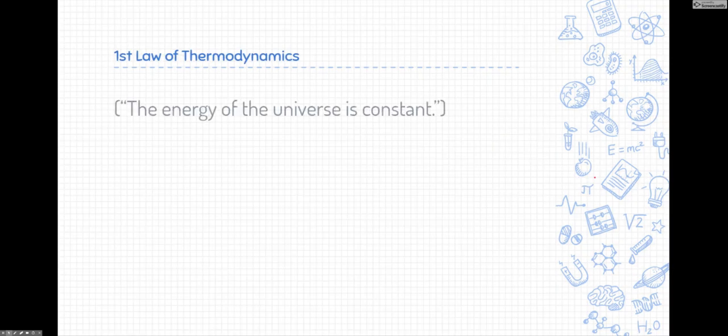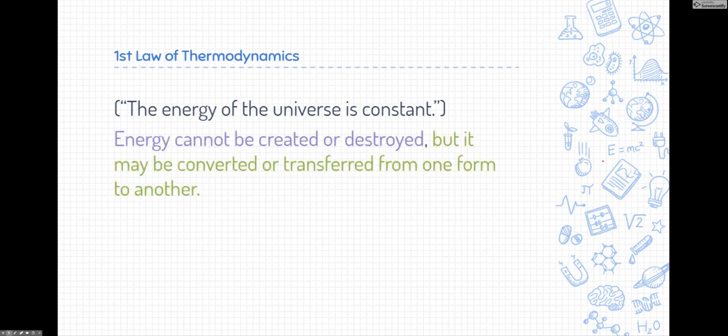The first law of thermodynamics is what we're eventually trying to get to, and it states that the energy of the universe is constant. That's not really my favorite definition of the first law of thermodynamics. It doesn't really tell us the nitty-gritty details that we need to know. So I'm going to give you a better definition: Energy cannot be created or destroyed, but energy may be converted from one form to or transferred from one form to another.